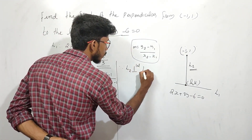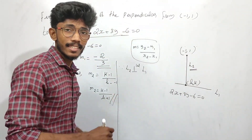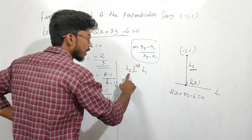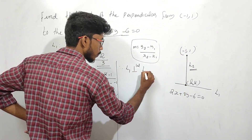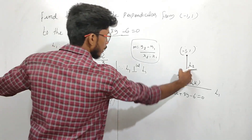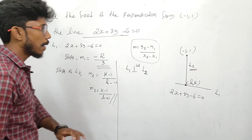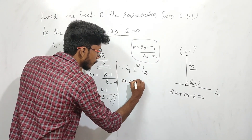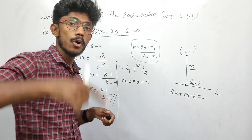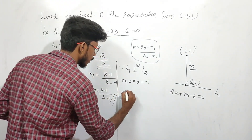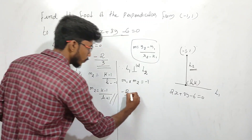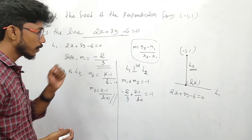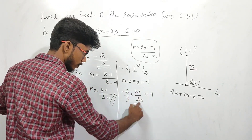Since L2 is perpendicular to L1, for two perpendicular lines, m1 into m2 equals minus 1. What is m1? Minus 2 by 3. What is m2? k minus 1 by h plus 1. So minus 2 by 3 multiplied by k minus 1 by h plus 1 equals minus 1. Solve this.